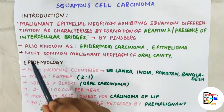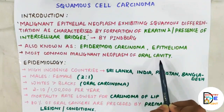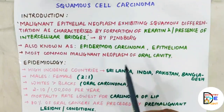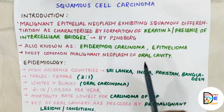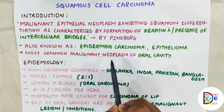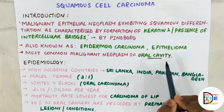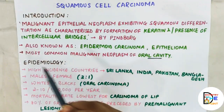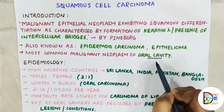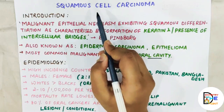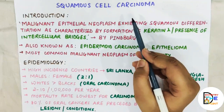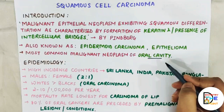Squamous cell carcinoma is the most common malignant neoplasm of the oral cavity. Now basal cell carcinoma, discussed in a separate video, is the most common malignant neoplasm of the skin. But for the oral cavity region it is squamous cell carcinoma — this is a key distinction and can be asked as an MCQ in competitive PG exams. If you haven't checked our basal cell carcinoma video, the link is in the description box.